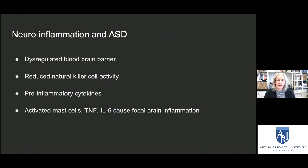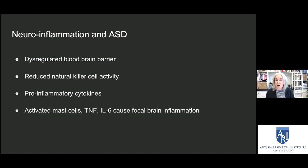Looking at research published over the past 15 years, both from research and clinical perspectives, we know these things: people we see often have a dysregulated blood-brain barrier, meaning things can pass across that barrier that are not intended to in a healthy setting. We have reduced natural killer cell activity, meaning an inability in many instances to fight off illness or infection. We have pro-inflammatory cytokines — that work has been around for many years. Other areas include mast cells, TNF-alpha, and IL-6, which have been researched in specific areas of brain inflammation.